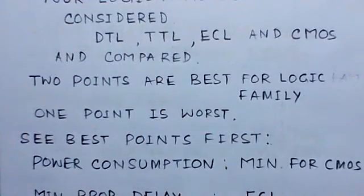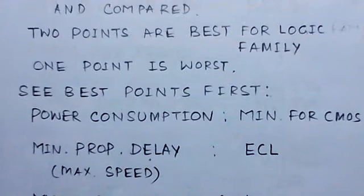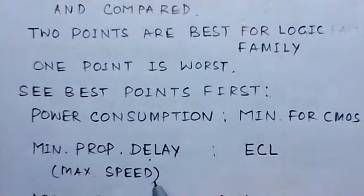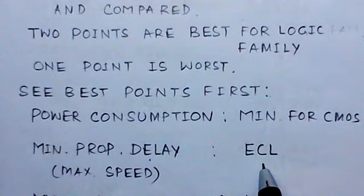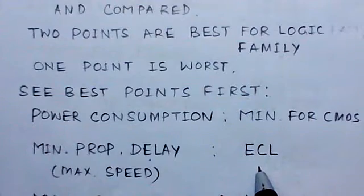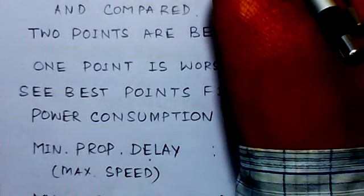Now, minimum propagation delay means maximum speed. Which gate has maximum speed? It is the ECL gate. This is another positive, favorable point for ECL, and that also falls into column Q.